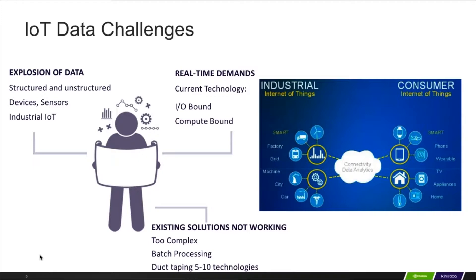We see an explosion of data. This can be structured or unstructured data. There's a wide variety of different sensors out there, and this data can be structured, coming from mobile devices, smart meters, or connected cars. Correlating these data feeds can be a pretty tough task for an organization.